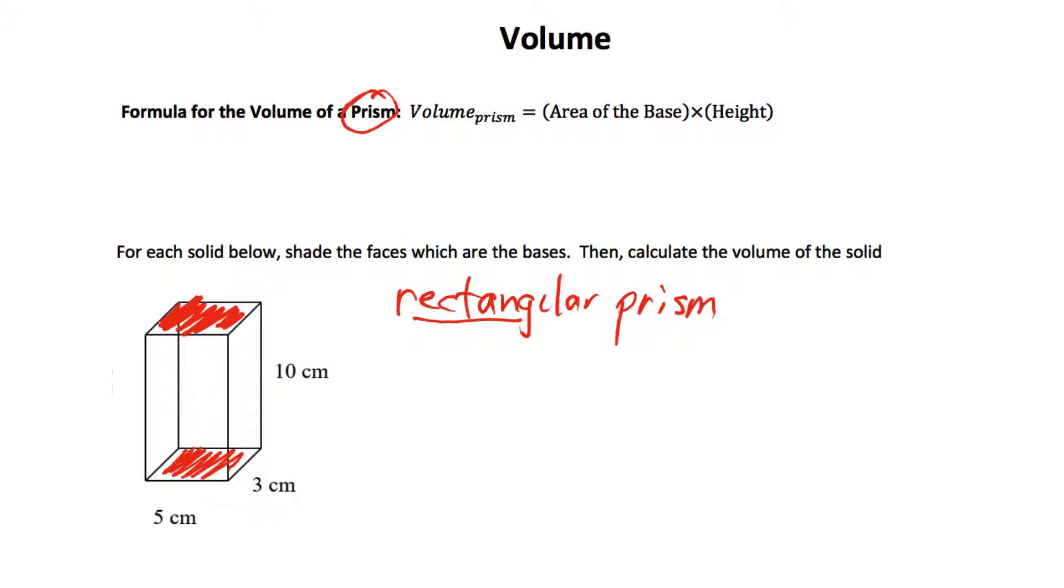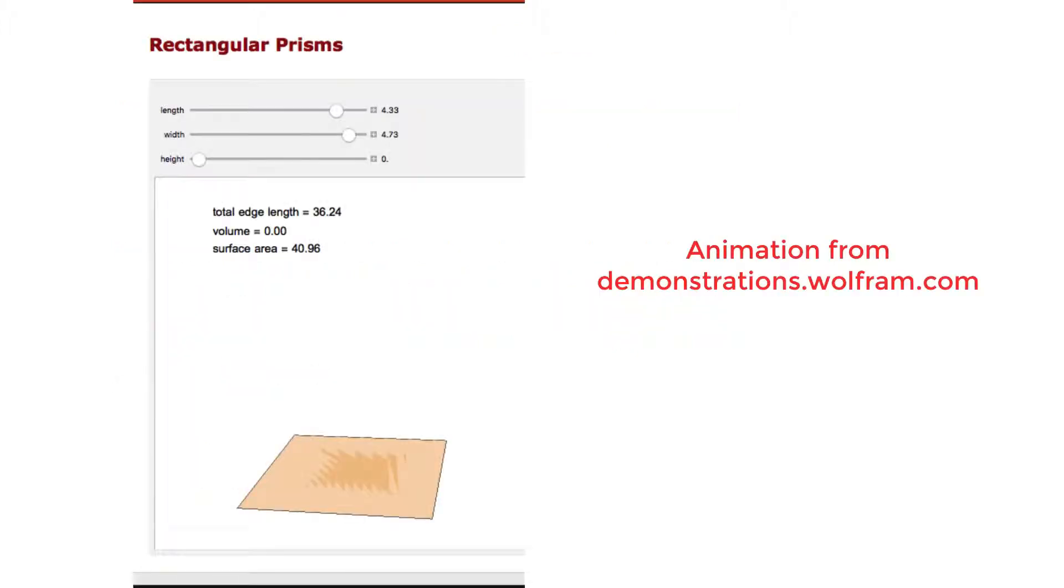To get the volume, what I'm going to do is take the area of the base, so the area of this rectangle, and multiply by the height, which is like the number of layers of the base to get to the base at the top. I have a demonstration of this concept from the Wolfram Alpha Demonstrations Project website. Here's my base that I colored in on the other screen, my length times width, my base.